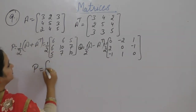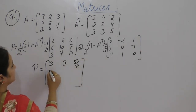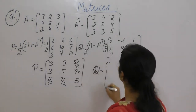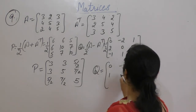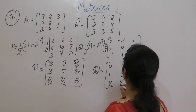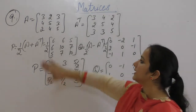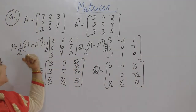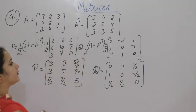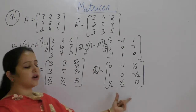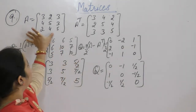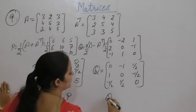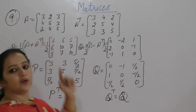So P equals half of A plus A transpose, giving the matrix with entries 3, 5/2, 5/2 on the top row; 5/2, 5, 7/2; and 5/2, 7/2, 5. And Q equals half of A minus A transpose, giving 0, -1, 1/2; 1, 0, -1/2; -1/2, 1/2, 0. Now we have to show that A is the sum of symmetric matrix P and skew-symmetric matrix Q.